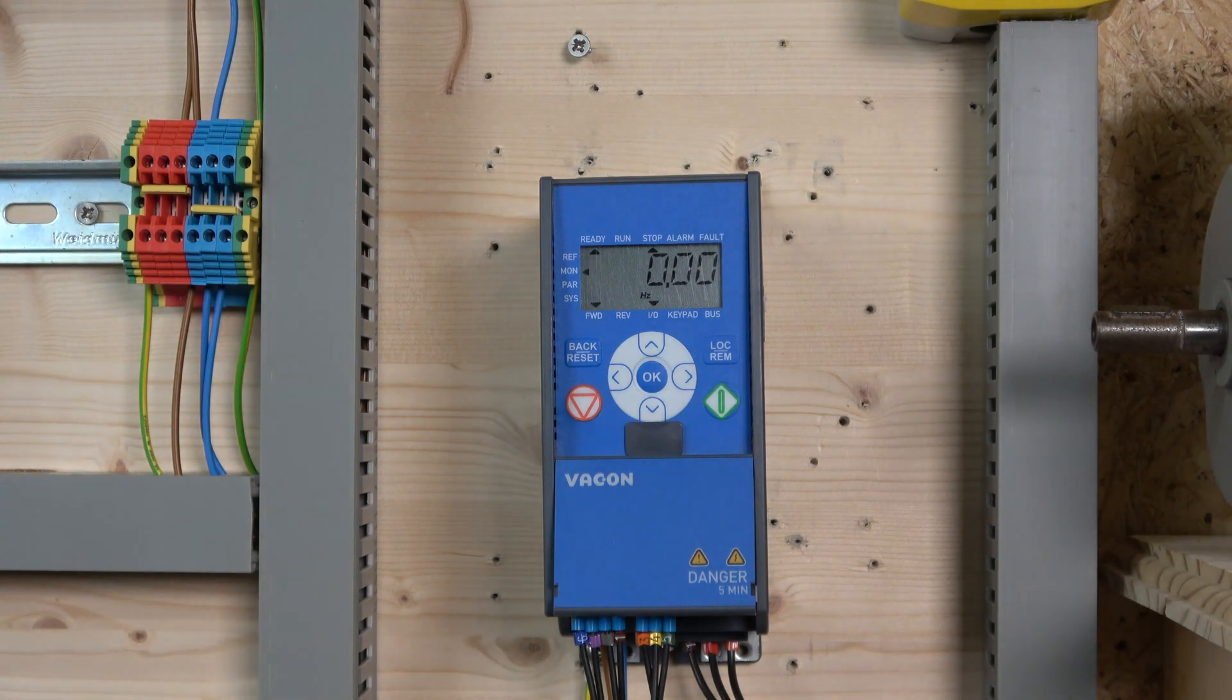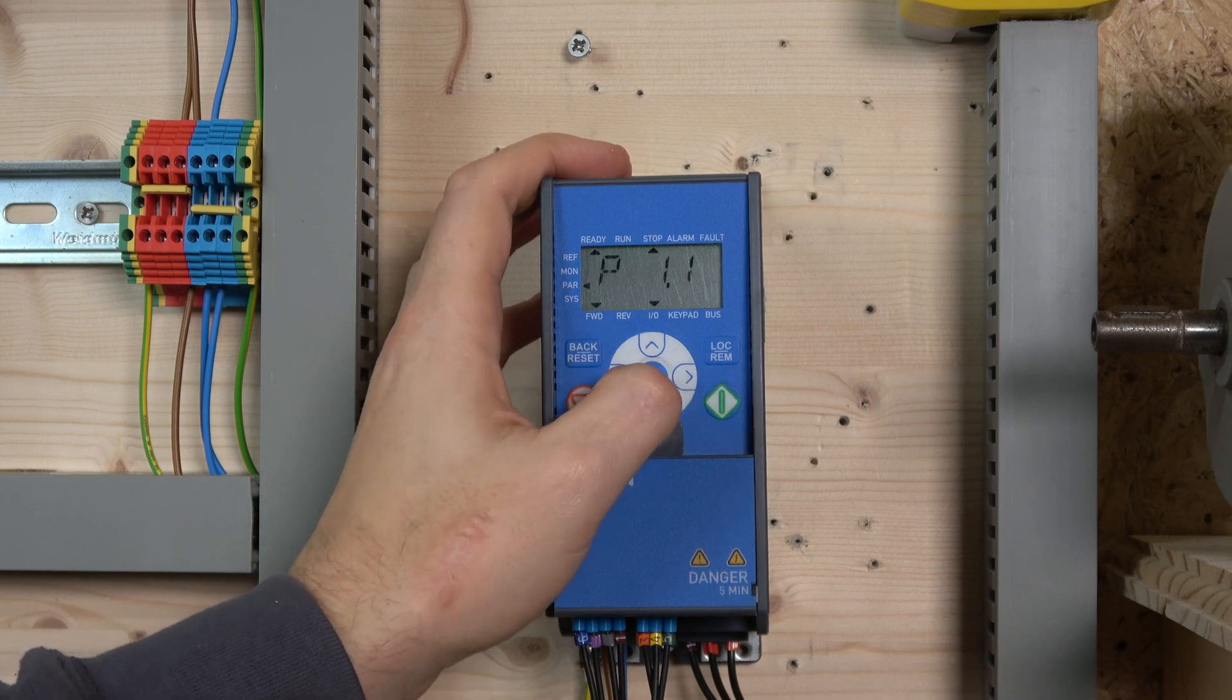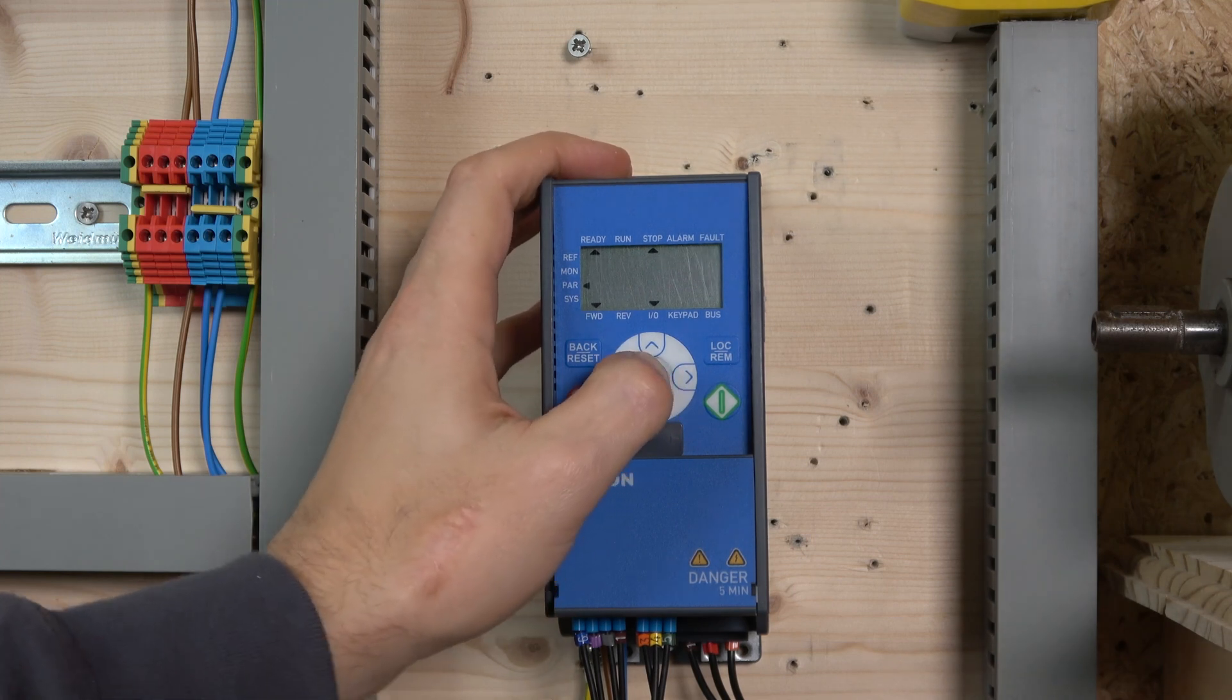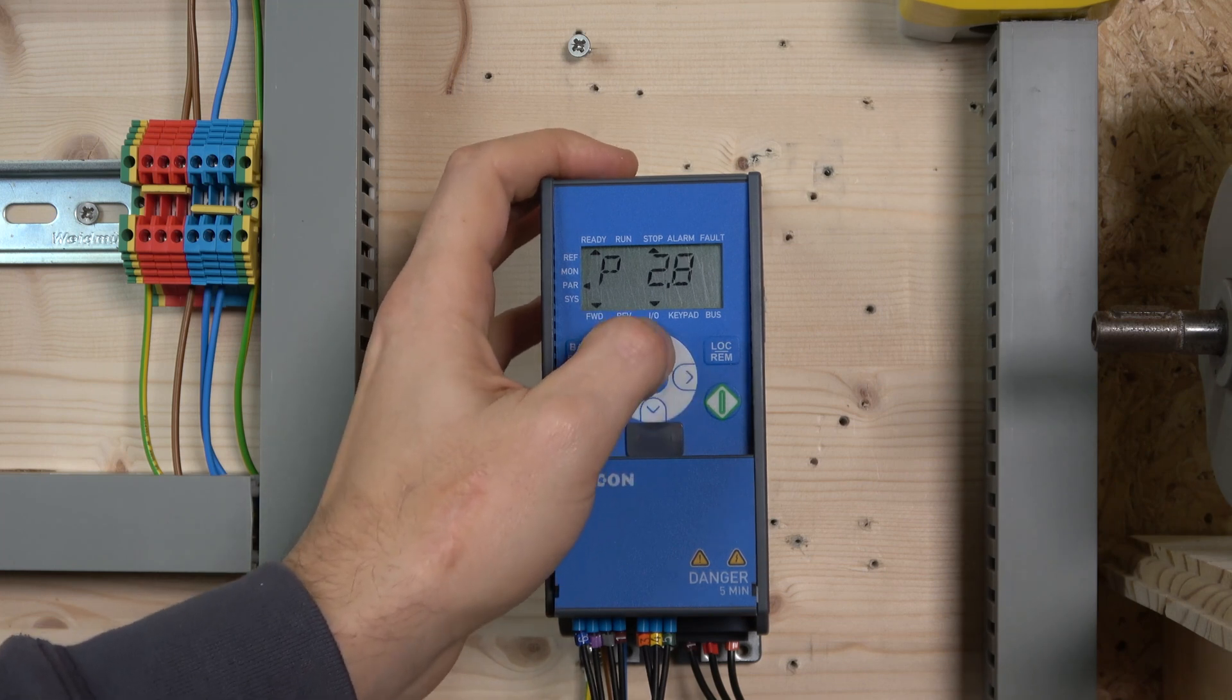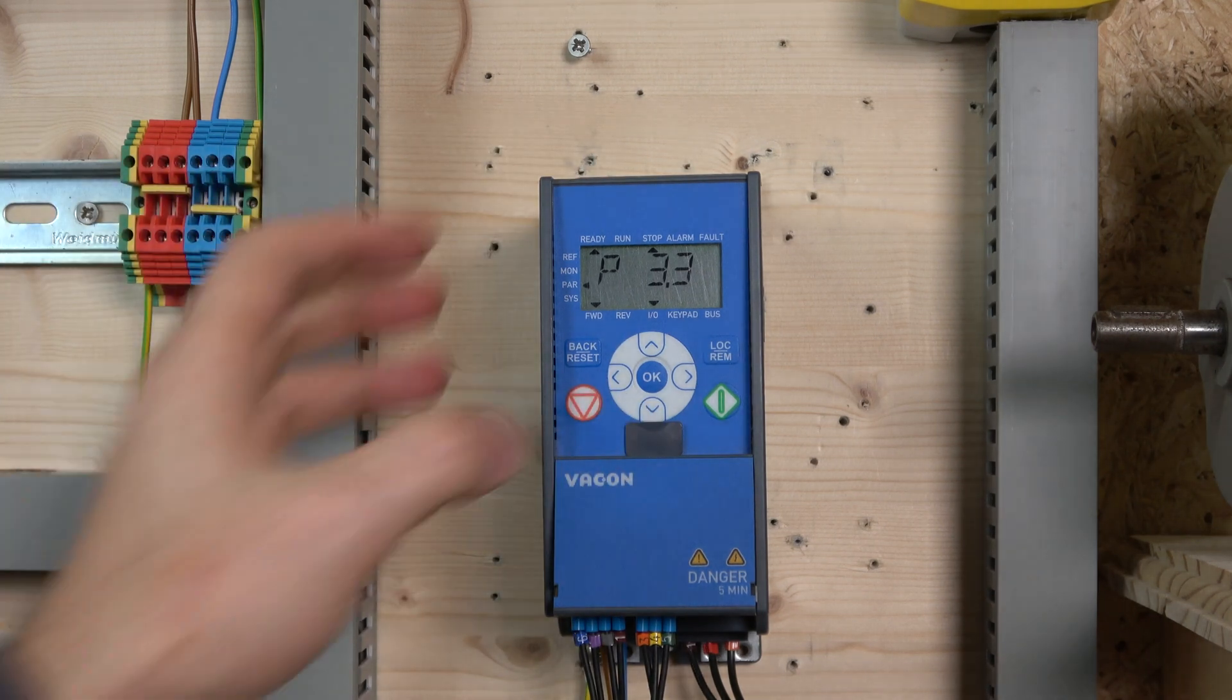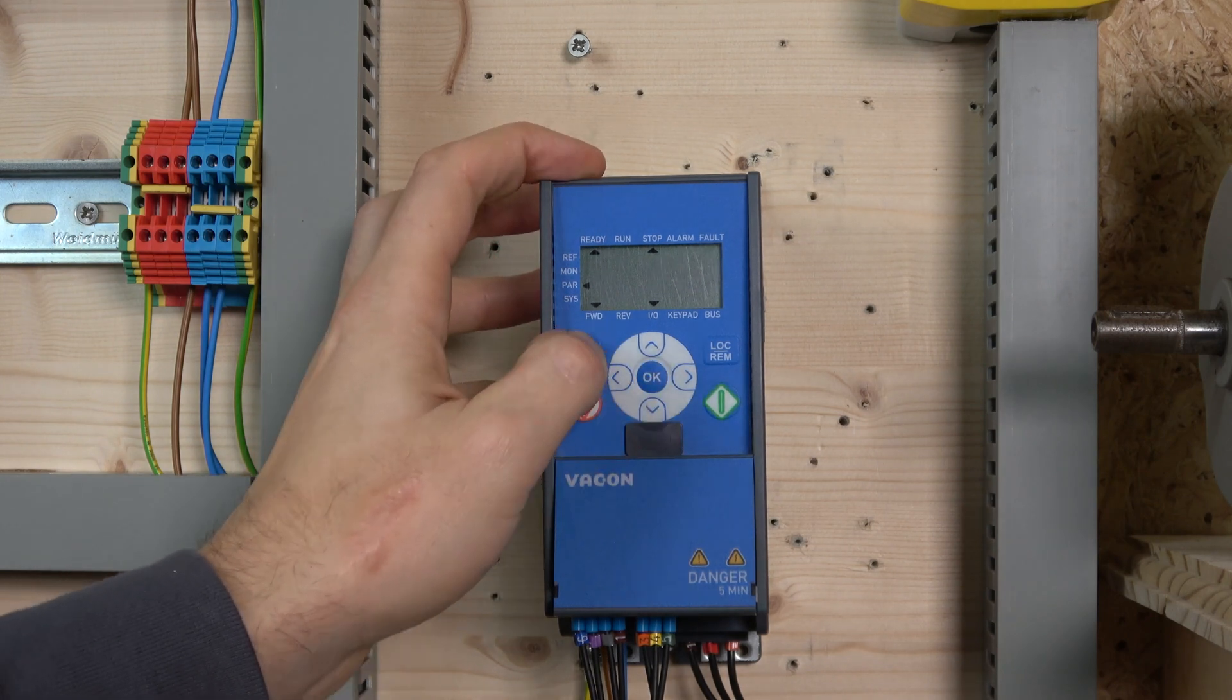For the drive settings, we need to change a couple things. First, where we're controlling and getting start controls from - that's in parameter 2.2.1. Change that to zero, which stands for remote I/Os. Next is parameter 3.3 where we select where we're reading frequency from. I selected analog input one, which is option 4 for voltage readout.